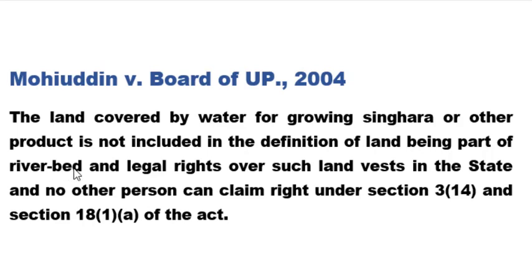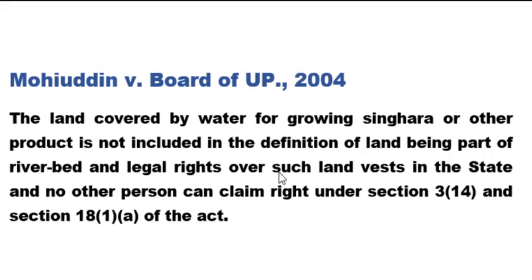It is a part of the river bed, and the legal right belongs to the state. The nation has another thing in the land. This section is about settlement of certain lands with the intermediaries and cultivators as bhoomidhars. In this section, no person can claim their right on this land — it is a need of the state. The legal right on this land belongs to the state.